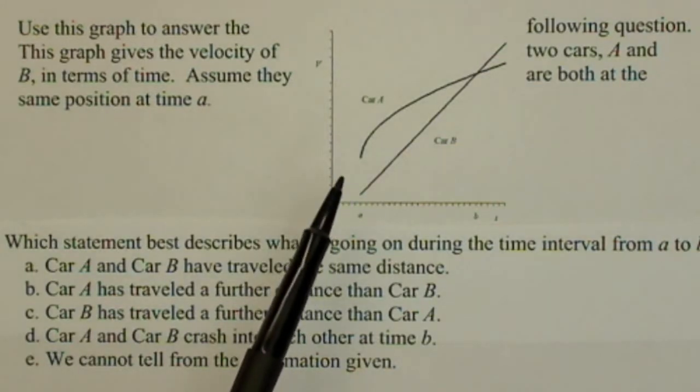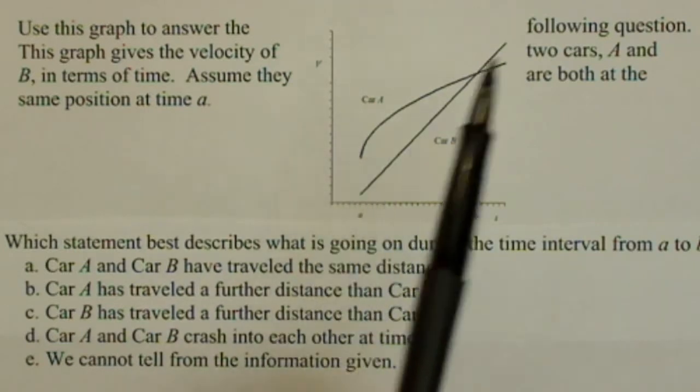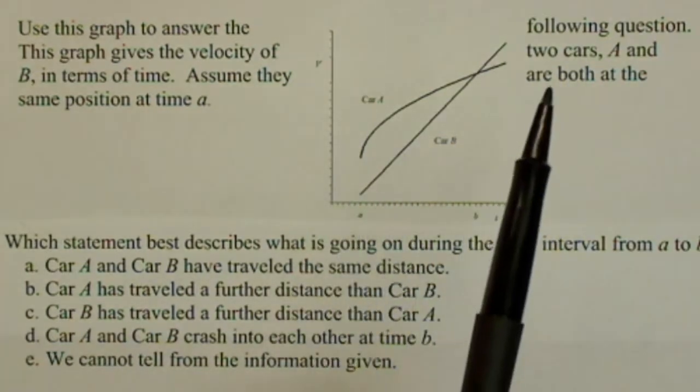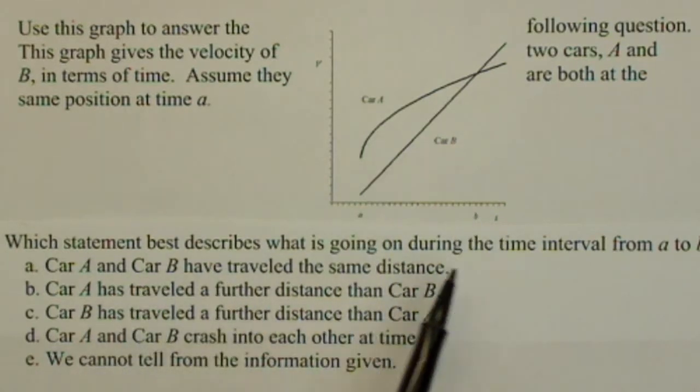So, we're given a graph that plots two cars' velocity as functions of time. We have car A and car B from A to B. And we're asked which statement best describes what's going on in the time interval from A to B. Which of these can we definitely tell is happening?